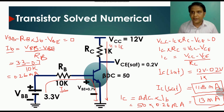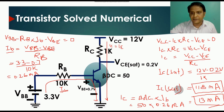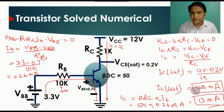Even if you further increase the base current from 0.26 milliampere to 0.3, 0.4, or 0.5 milliampere, the collector saturated current IC(sat) will still only flow at 11.8 milliampere. So this circuit is designed to work in the saturation region. Hope you understand the concept. If you have any question, feel free to ask in the comment section. Thanks for watching.